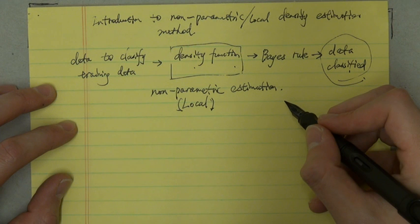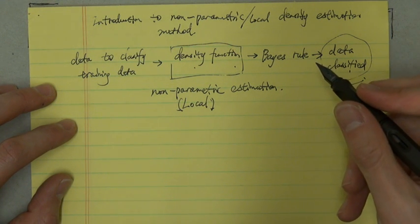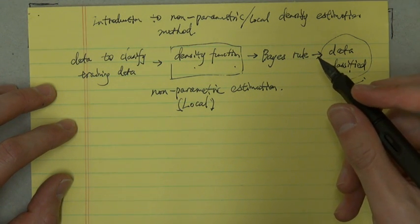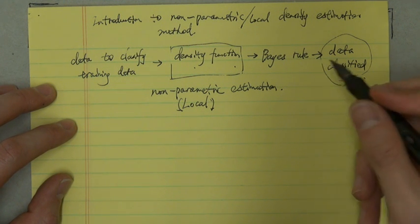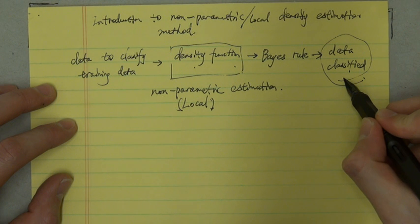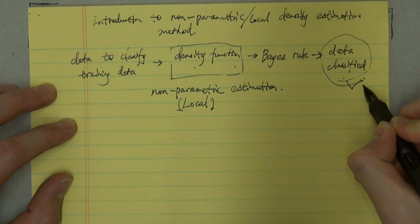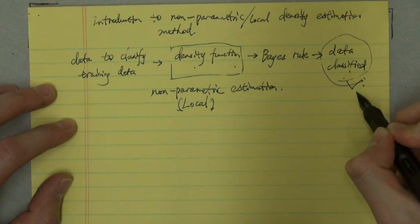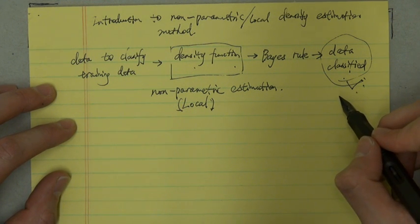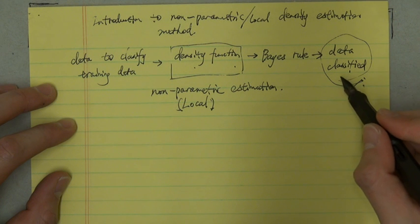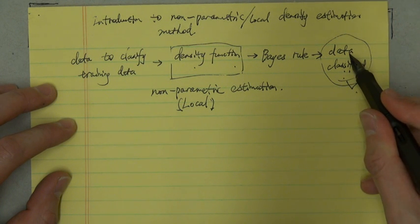Although the local estimation is less reliable with larger bias and variance than the parametric density estimation, sometimes it still can give us an acceptable classification result. So this is what we concern most. Therefore, the evaluation for non-parametric density estimation is whether or how good it can help us to classify the data into different categories.